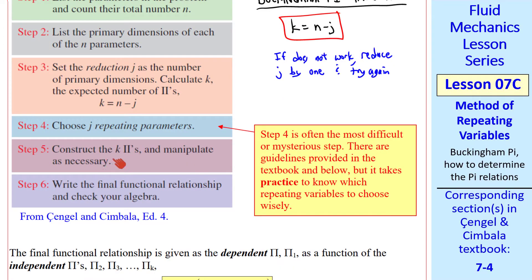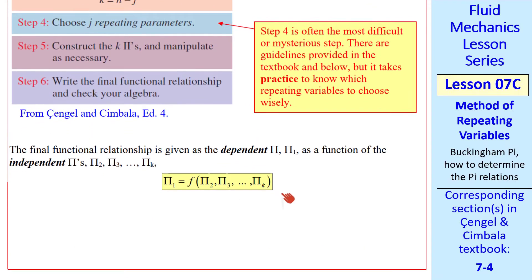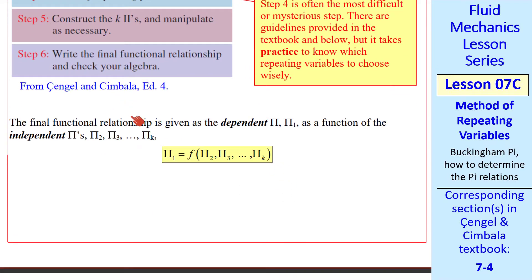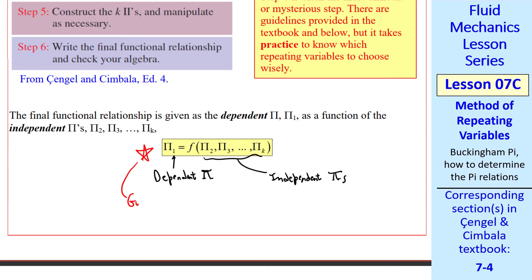Step five is to construct the k pis. Remember k is the number of pis that we expect. And then manipulate. I'll also show you how to manipulate these as necessary. Finally, we write the final functional relationship and always check algebra to make sure our pis are non-dimensional. The final functional relationship is that the dependent pi is a function of the independent pis. This is the goal of this whole procedure, to get pi 1 as a function of the other pis. This is the final result of our analysis.